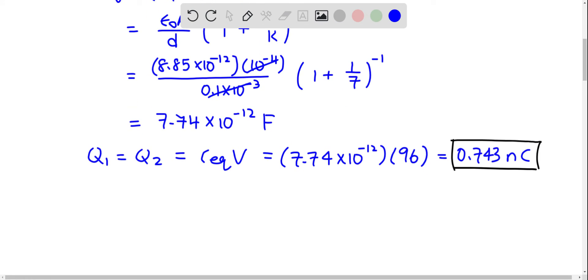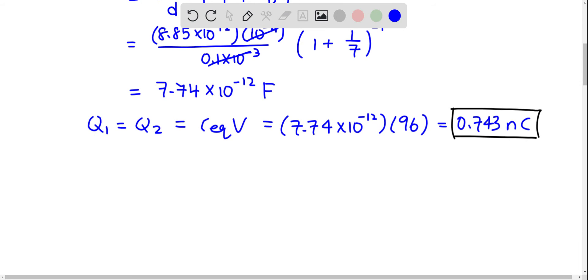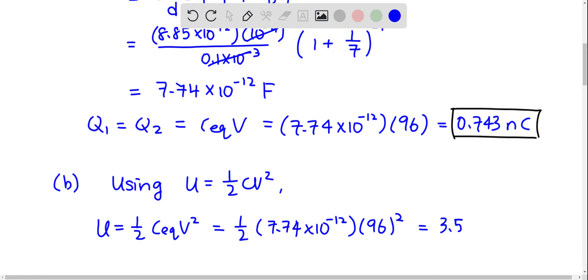In part B, we want to find the total energy stored in both capacitors. We will be using U equals half CV squared. In this case, U will just be half times the equivalent capacitance times V squared. Half times 7.74 times 10 to the negative 12 times 96 squared, and you get 3.57 times 10 to the negative 8 joules.